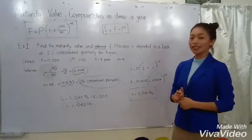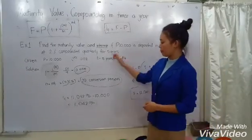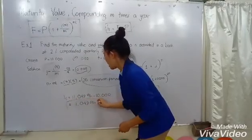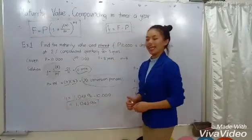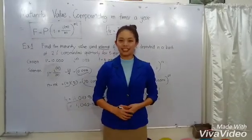To get the compounded interest, you minus this from the principal. Using this formula, you'll get 1,048. That's all for our lesson. Thank you for listening, and I hope you learned a lot from it.